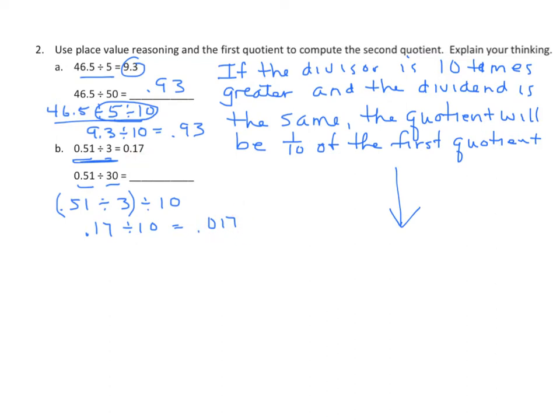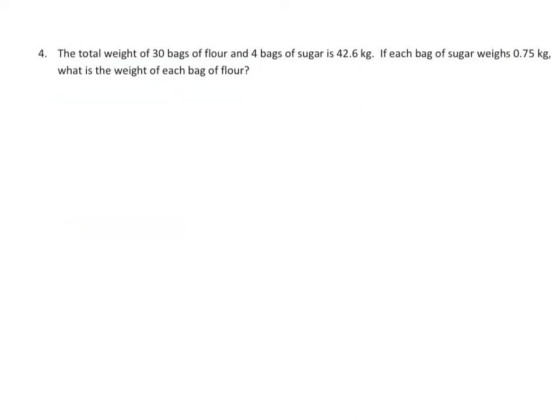Now we're going to hit a couple of word problems — one from the practice set and the other from the homework. I picked this one because it's a little complicated, and it's important that you see examples of complex word problems solved using tape diagrams. The problem reads: the total weight of 30 bags of flour and 4 bags of sugar is 42 and 6 tenths kilograms. If each bag of sugar weighs 75 hundredths of a kilogram, what is the weight of each bag of flour?